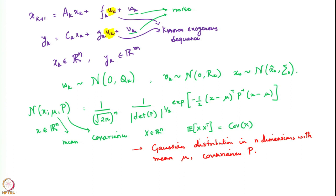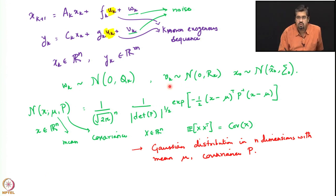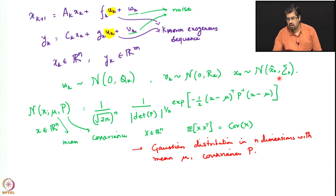What we are assuming about the noise in our system is that both the system noise and the observation noise have mean 0, with covariance matrices Q_k and R_k respectively, and the noise is Gaussian in both cases. The system starts from a state x_0 drawn according to a distribution with mean x̂_0 and covariance Σ_0.